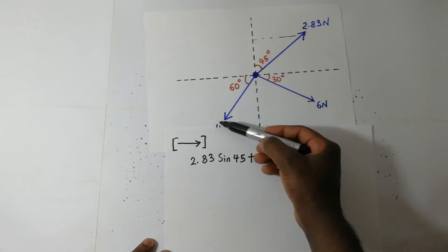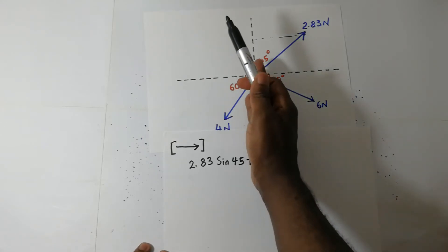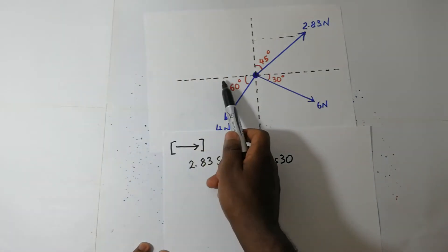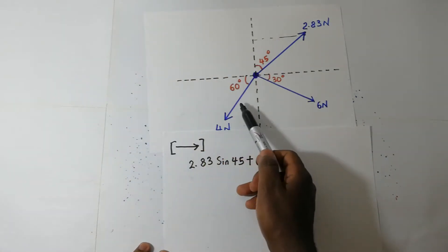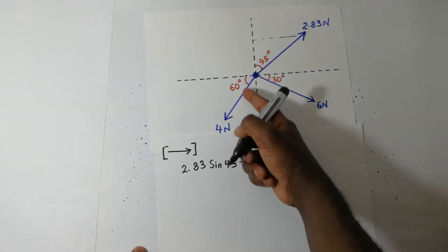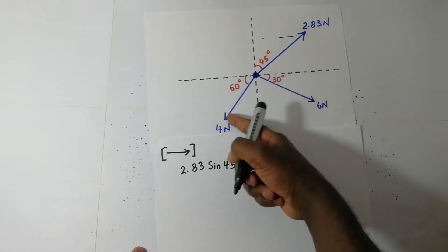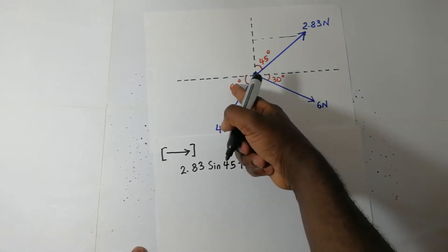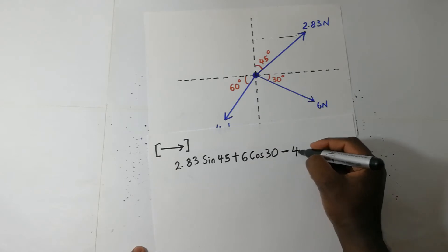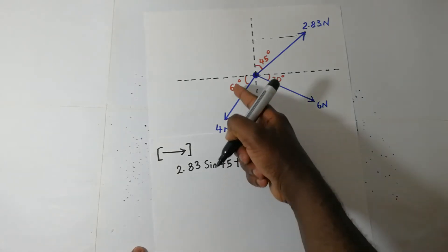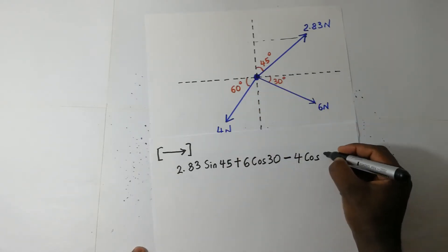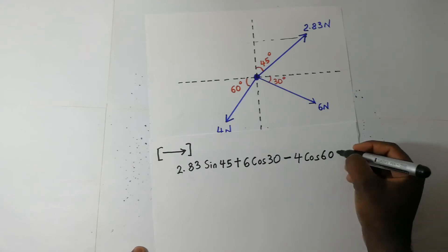Then we have this one here. It is on the negative side of the X axis, so it's going to be minus — resolving this it is going to be minus 4 cosine of 60.